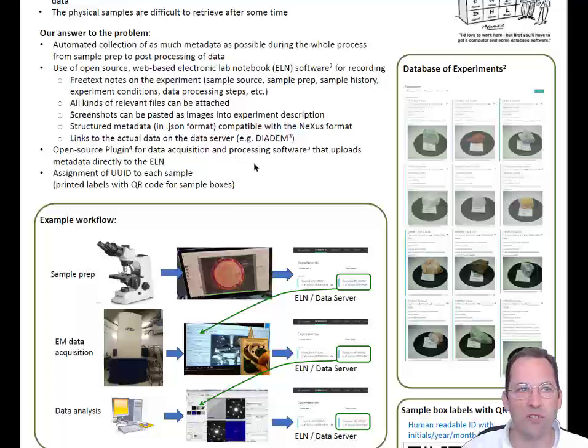We have used an open-source electronic lab notebook, eLab FTW, and we've modified it to suit our purposes. It's very nice at storing free text data and uploading images, but we want to have structured information that machines can go through and extract information from. We've now extended the capabilities of this open-source ELN solution to also store structured metadata in the form of JSON files that you can even edit online.